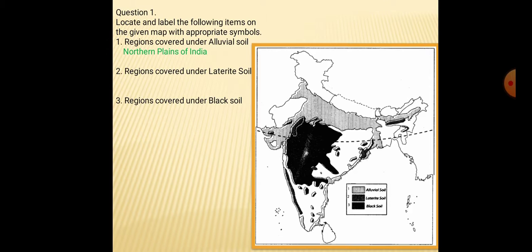Second question: regions covered under laterite soil — laterite soil is shown with white color. And regions covered under black soil — black soil is found in Maharashtra, some parts of Madhya Pradesh, Gujarat, Karnataka and Telangana.